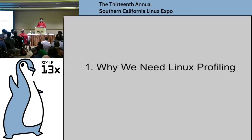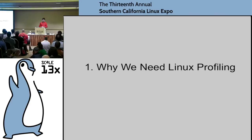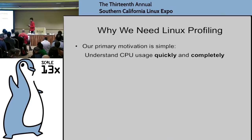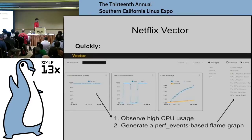The first section is why we needed Linux profiling in the first place. At Netflix we have a lot of instances — most of them running Java, some Node.js, and other things. In the Java world there are lots of commercial profilers, and it's not too hard to build your own using the JVMTI interface. So why do we need Linux profiling in particular? Our primary motivation is simple: to understand CPU usage quickly and completely. We're building a tool called Vector, which we'll be open sourcing on Netflix OSS.